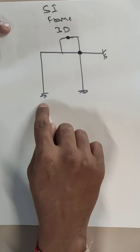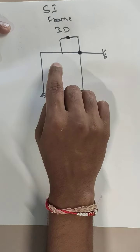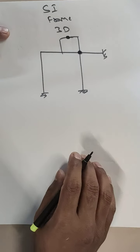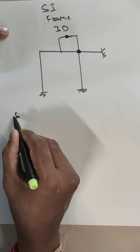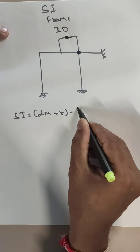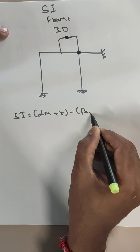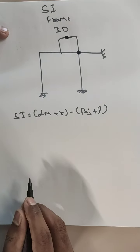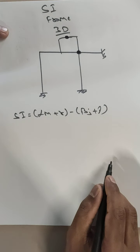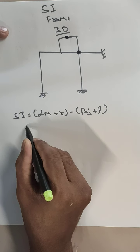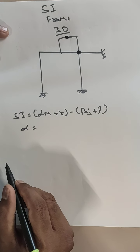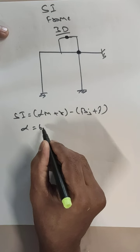Here you can see I have given you a frame structure and I have hinges over here. To calculate static indeterminacy, the equation is SI = αm + r − βj + γ. Please be careful — this is a 3D frame, not a 2D frame. So your alpha value: for 2D it is 3, for 3D it is 6.